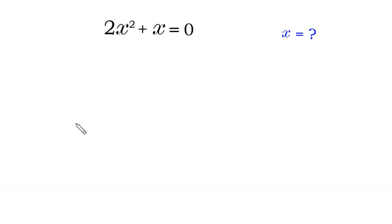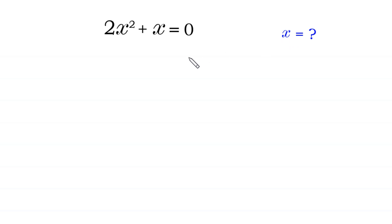Hello, welcome to how to solve this very nice equation: 2x squared plus x is equal to zero. We need to find all possible values of x. We will solve it by three methods.